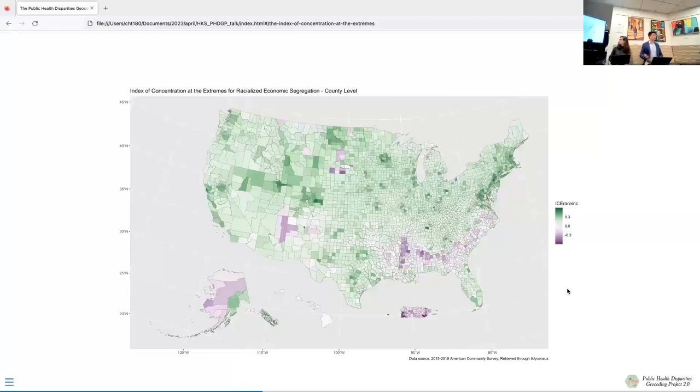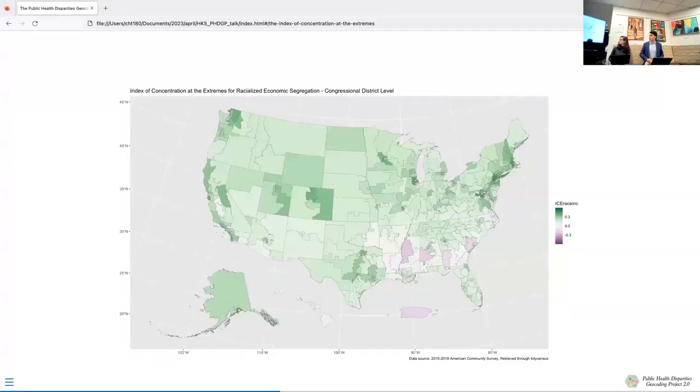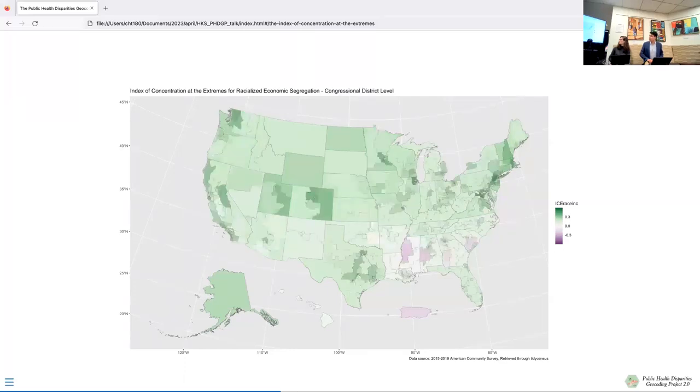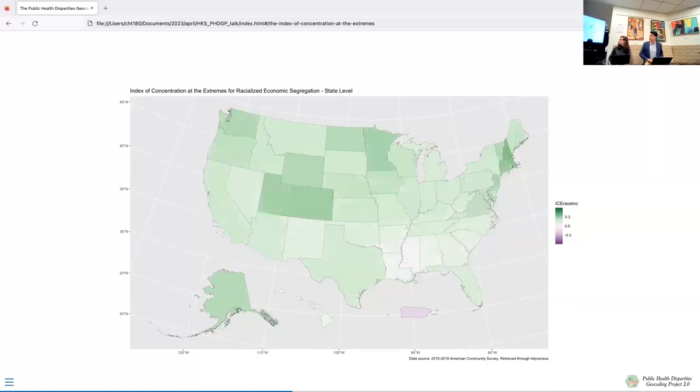Now, if we compare that to something like congressional districts, which are drawn with political motivations in mind, I want you to notice what disappears when we shift to that perspective. There's still some visible locations where we see a predominance of people of color living in poor households. But for the most part, we see less areas where they are visible and some areas where they're rendered completely invisible, like in Alaska and in Arizona and New Mexico. And then, of course, if we aggregate all the way up to the state level, the picture becomes even less visible for those folks. So again, just to flip through, I want you to see just how this process of aggregating and changing the boundaries that are used can render some populations invisible or visible.